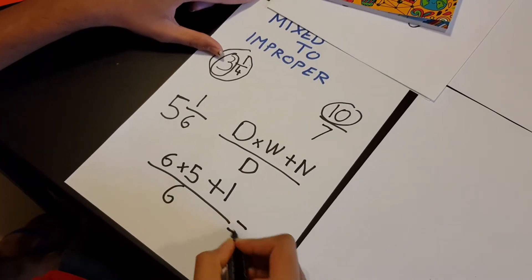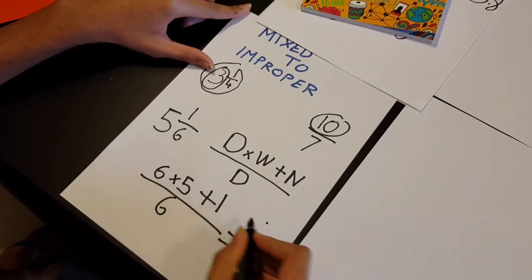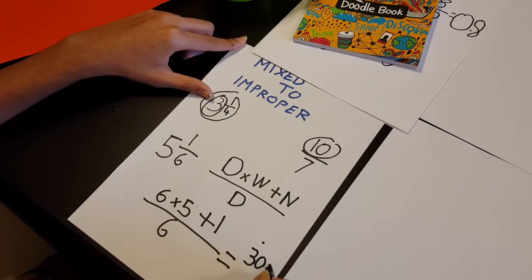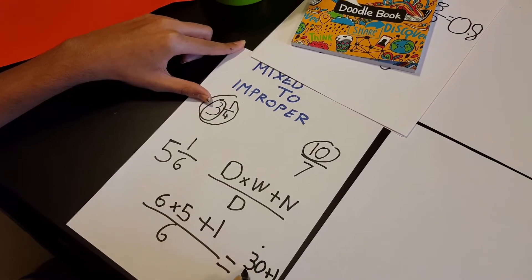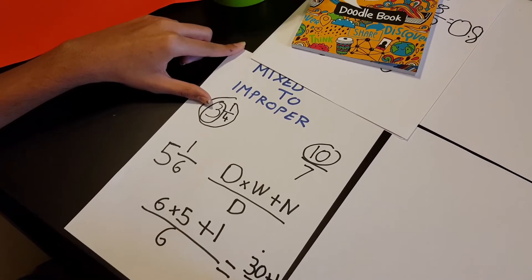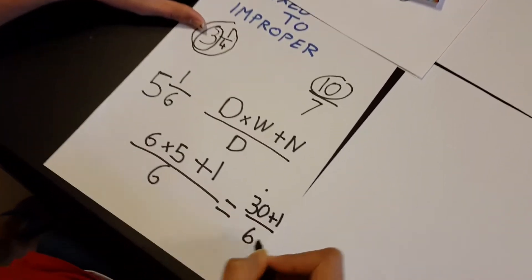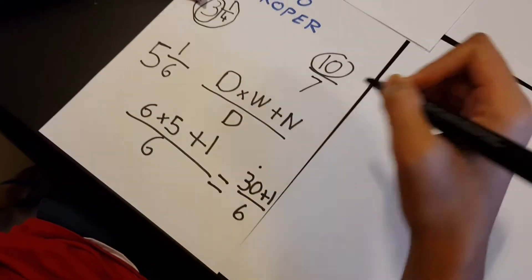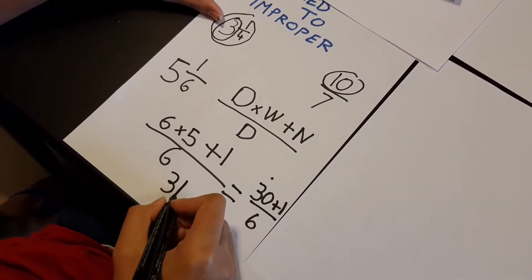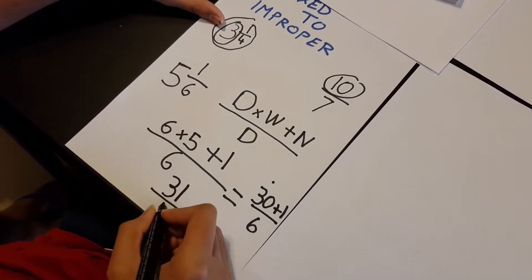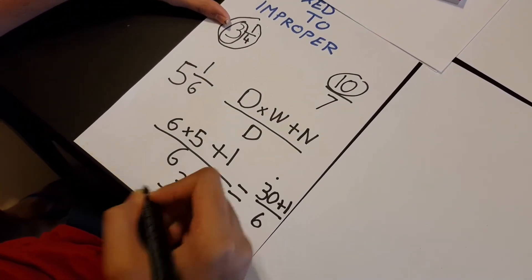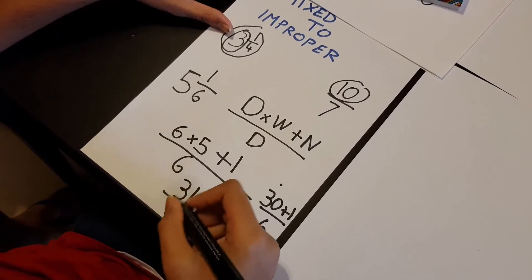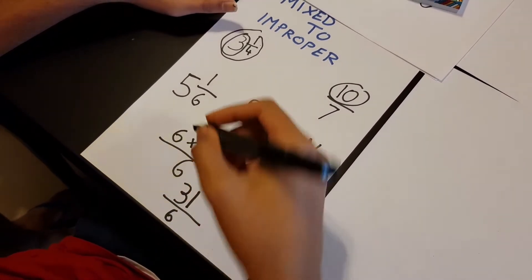6 times 5 is 30, plus 1 divided by 6. 30 plus 1 divided by 6 is 31 over 6. This is an improper fraction converted from a mixed fraction.